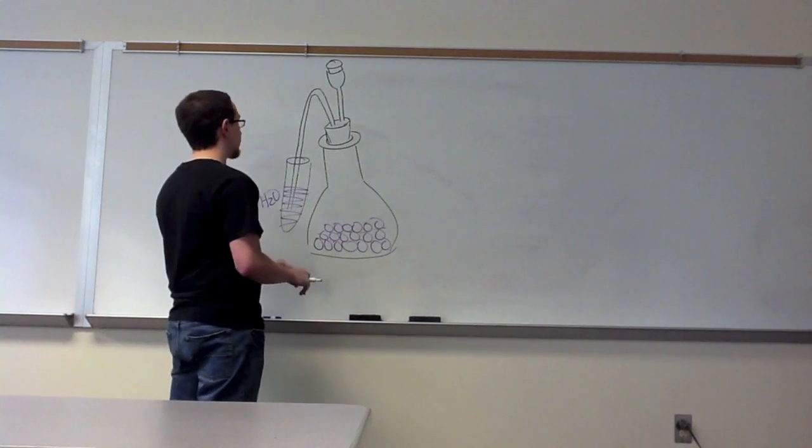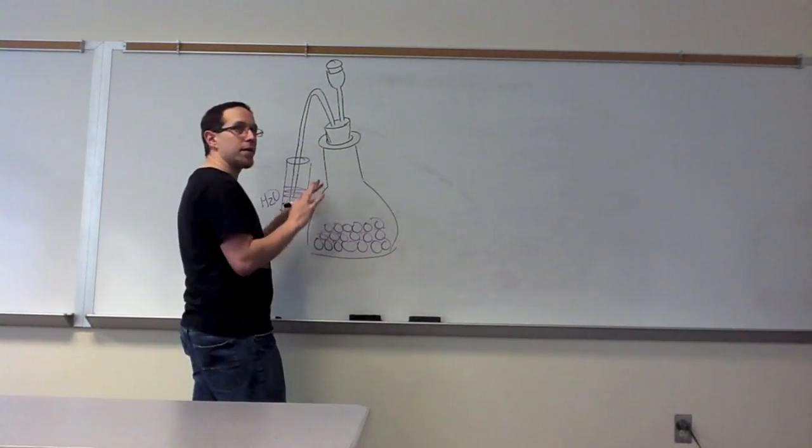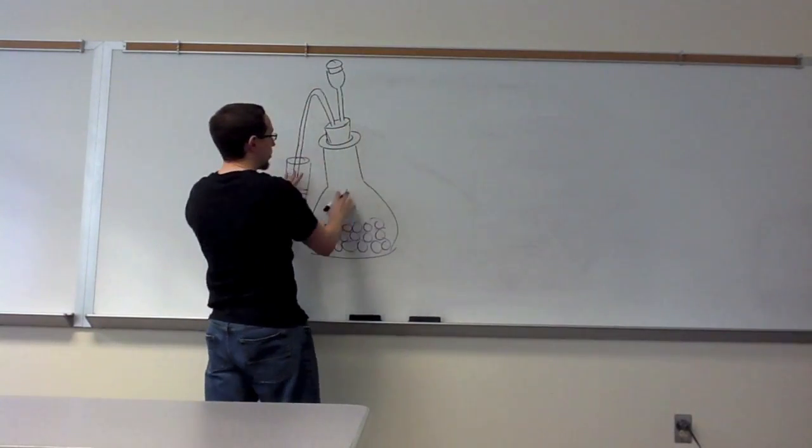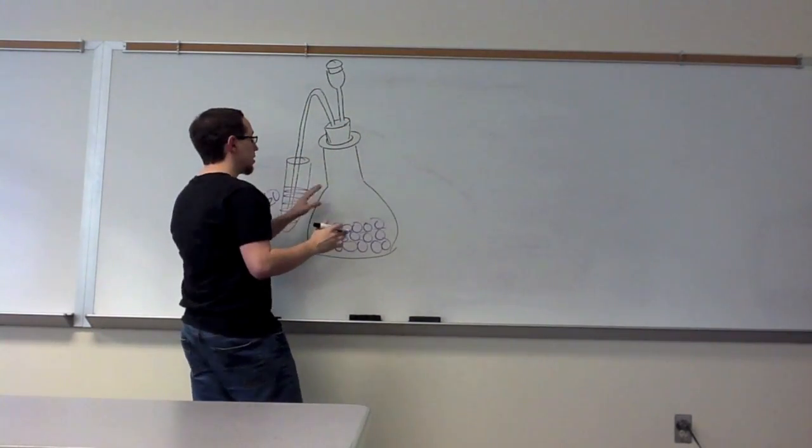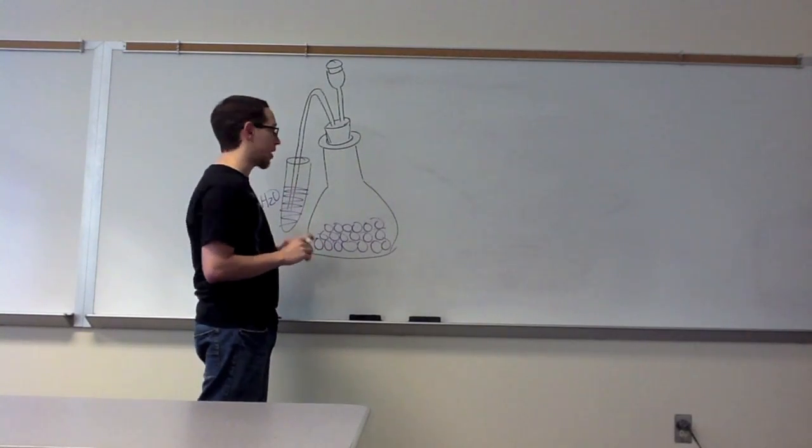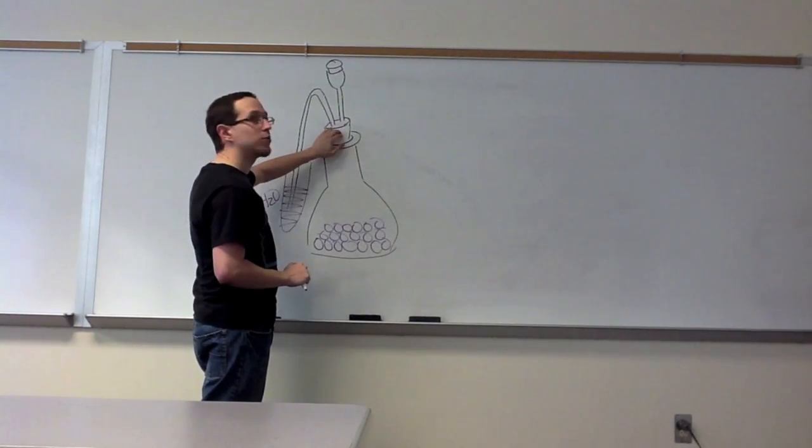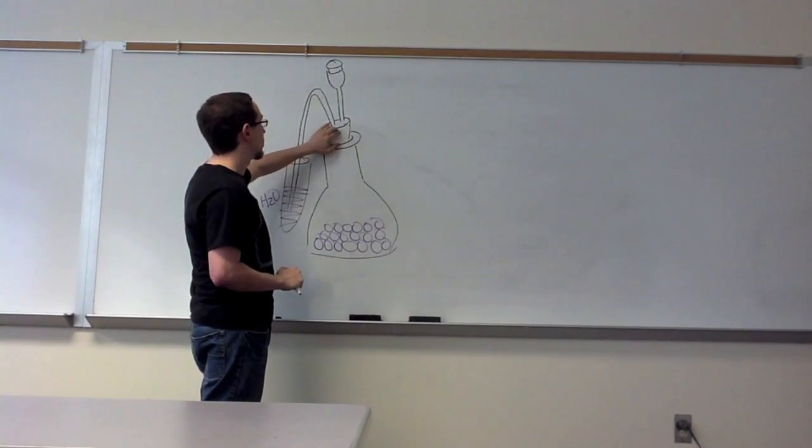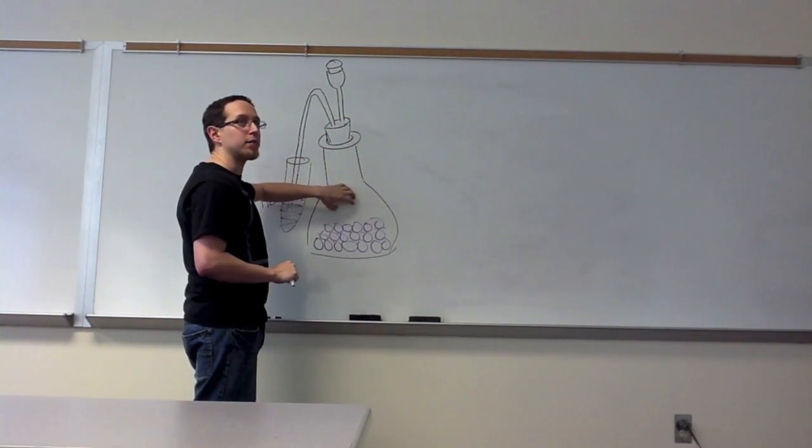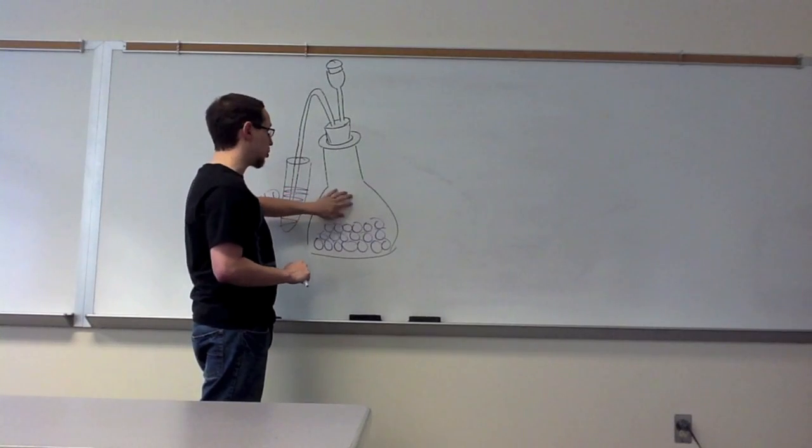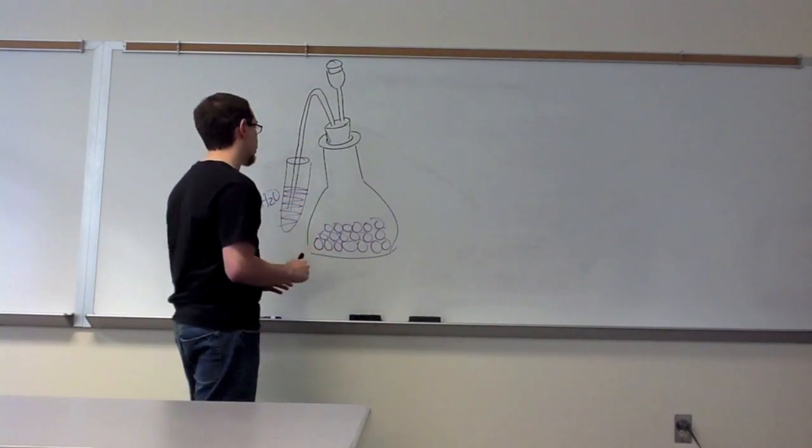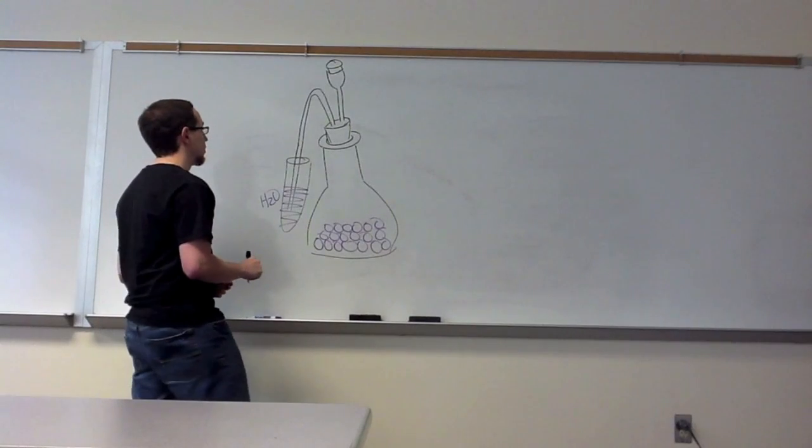Before we get there, one common misstep by students is that they think that because we have sealed this off completely so that nothing can get in or out, that this is therefore anaerobic respiration, and that is not correct. Before you sealed this off, what all was in here? Gases from the atmosphere. So you would have oxygen in here, which means these peas at this point in time can still perform cellular respiration.